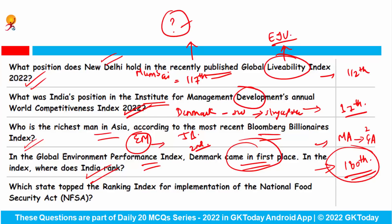Which state topped the ranking index for the implementation of the National Food Security Act? The answer is Odisha. The second position was Uttar Pradesh, and the third position was Andhra Pradesh.